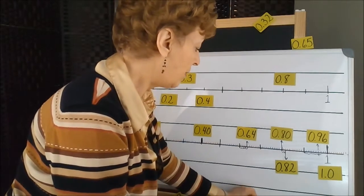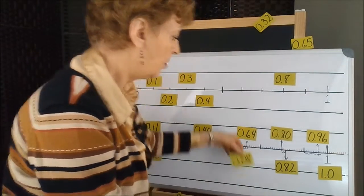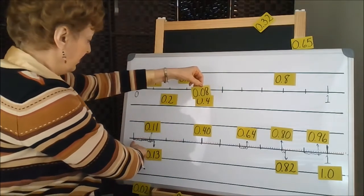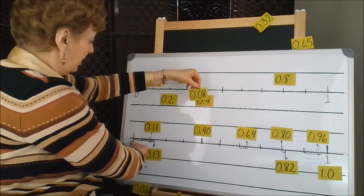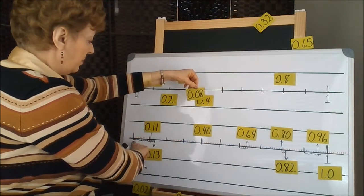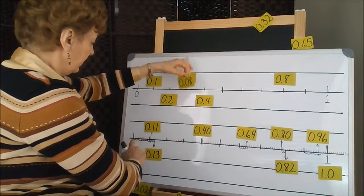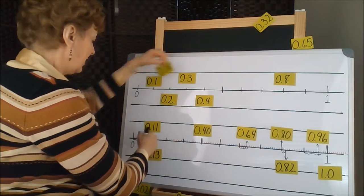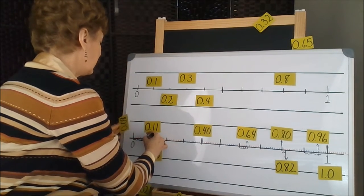While we're on eight, why don't we do eight hundredths. That would be eight jumps over from the zero: 1, 2, 3, 4, 5, 6, 7, 8. And it would have to be squeezed in here.